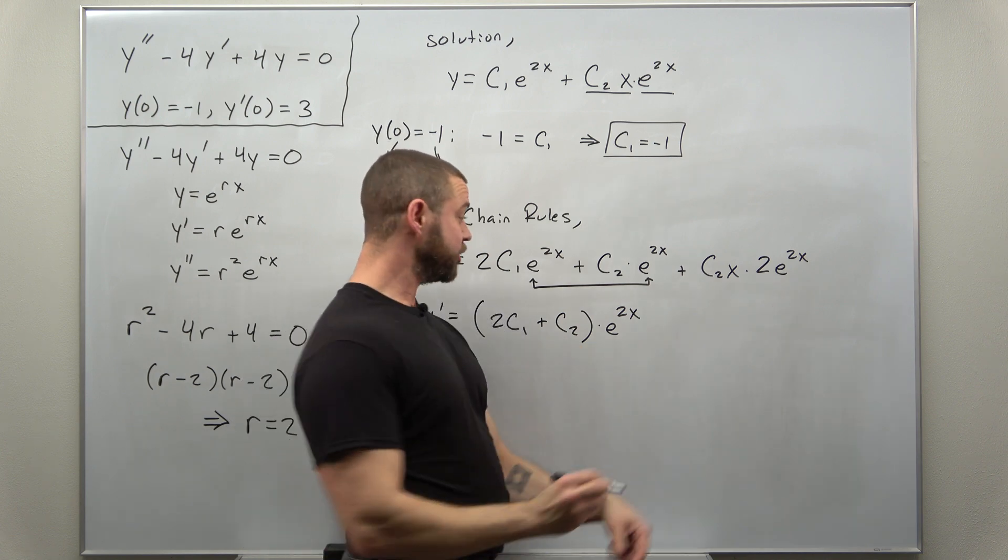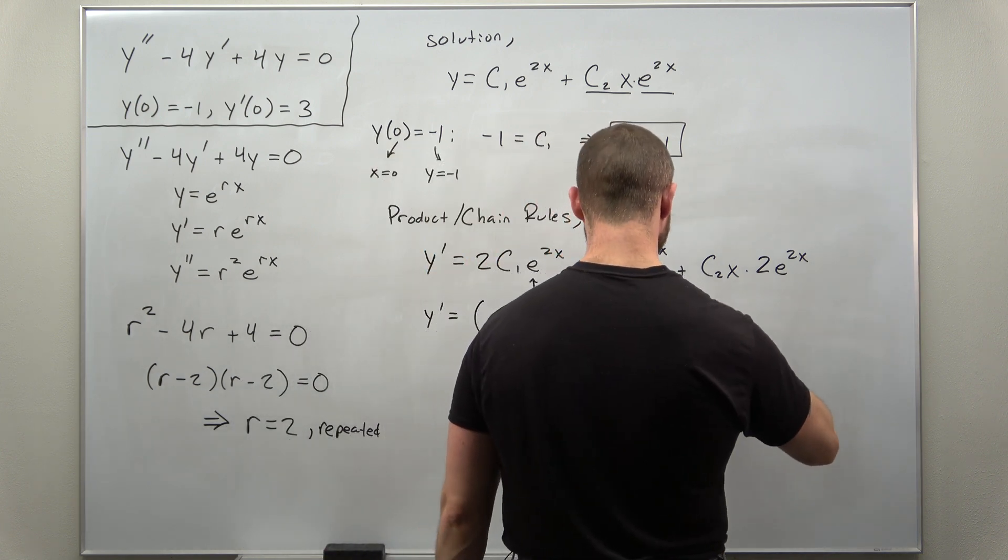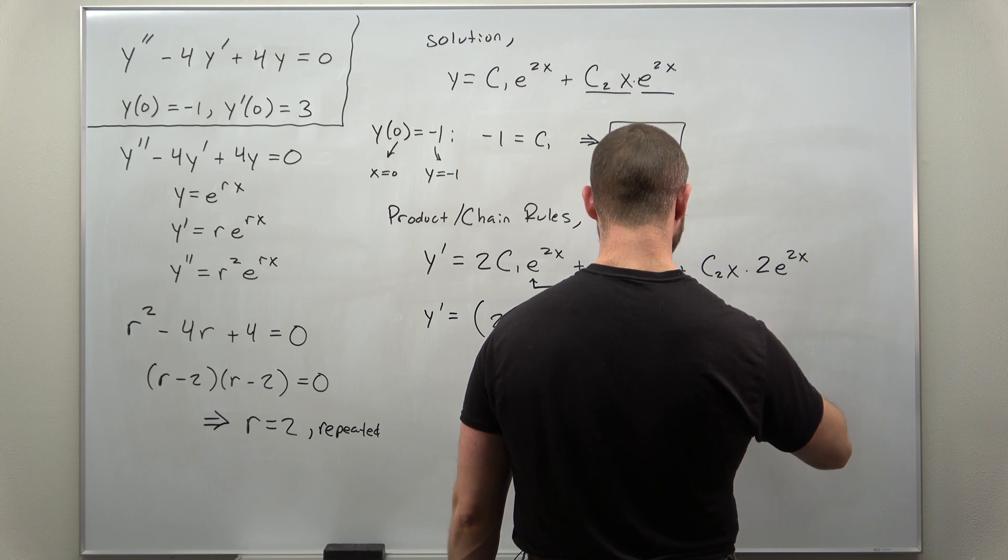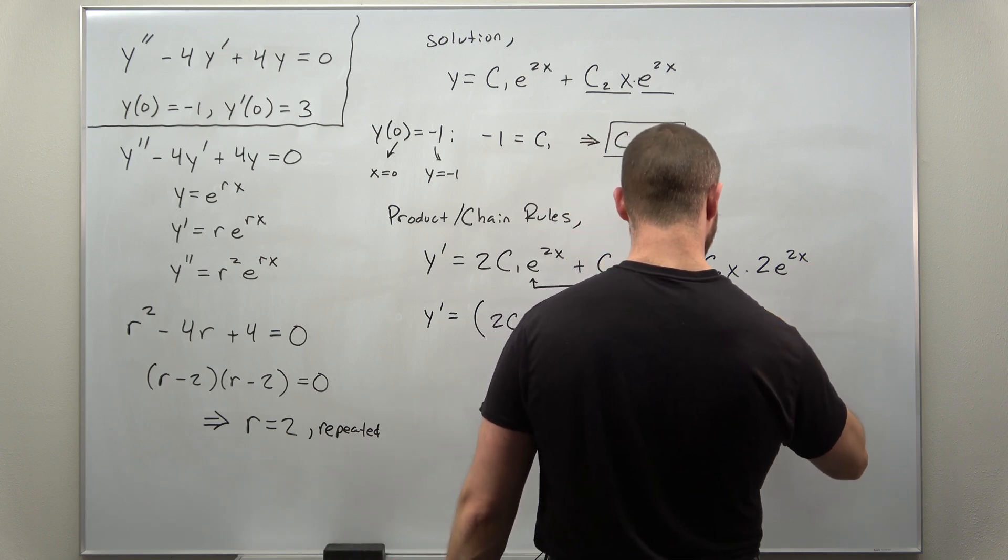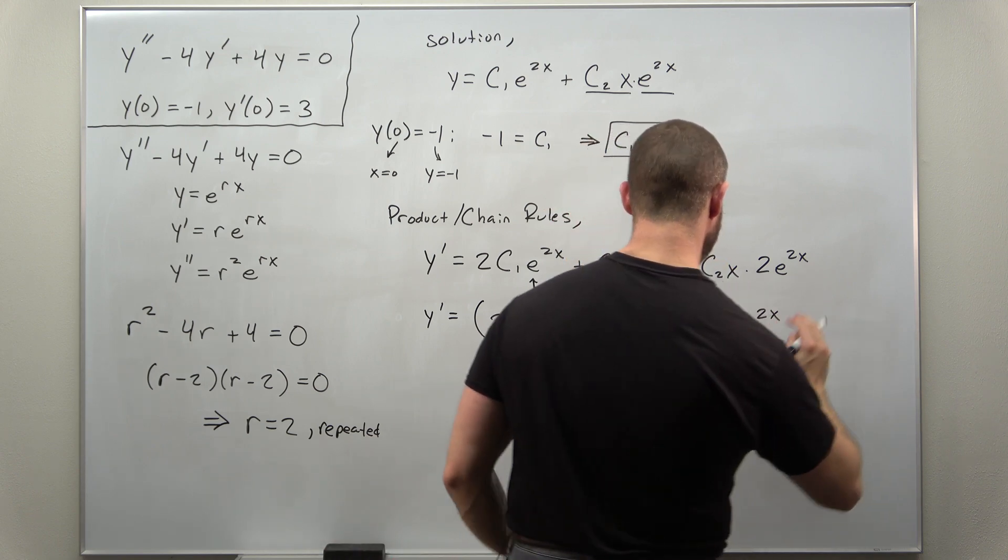So I can write this as 2c1 plus c2, and again we factored out e to the 2x, and then we have this term left over at the end: c2 times 2x e to the 2x.